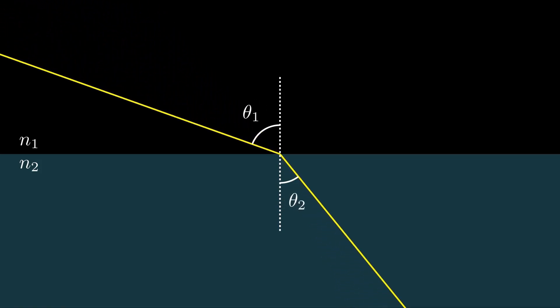High school has taught us that light refracts, or bends, when it moves into a substance with a different index of refraction, obeying a principle known as Snell's Law.